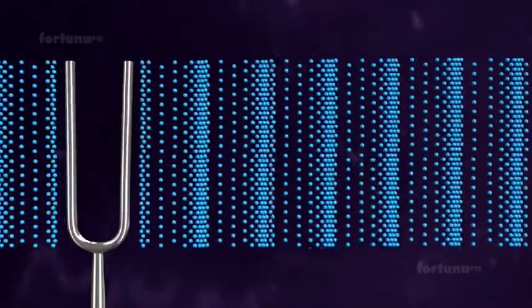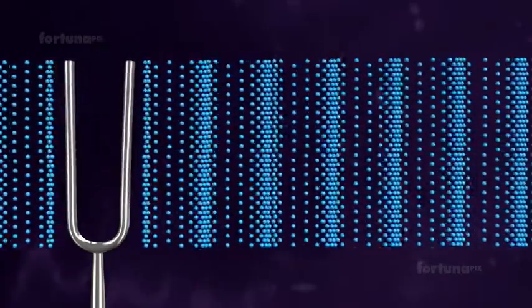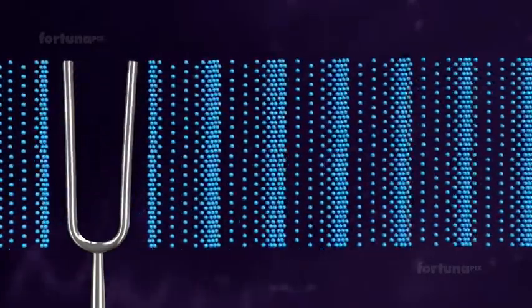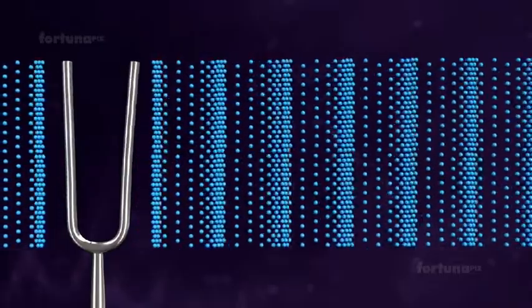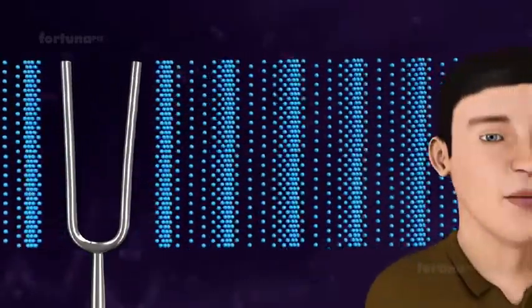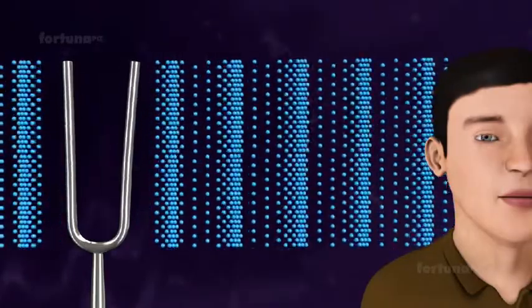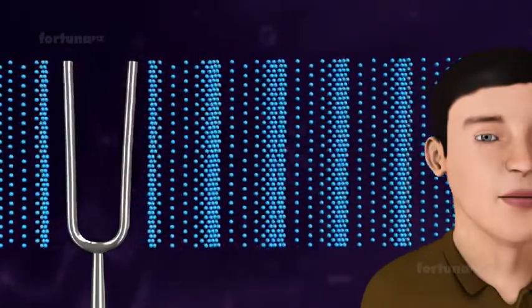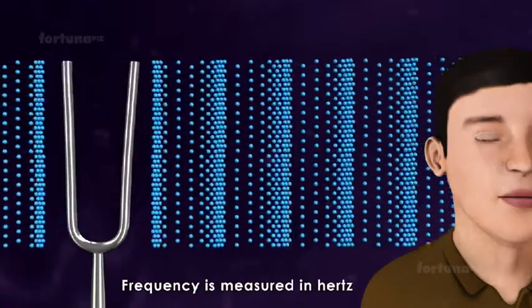The number of complete back and forth vibrations of a particle of the medium per unit of time is known as the frequency of waves. In other words, frequency is the number of waves reaching an observer every second. Frequency is measured in hertz.